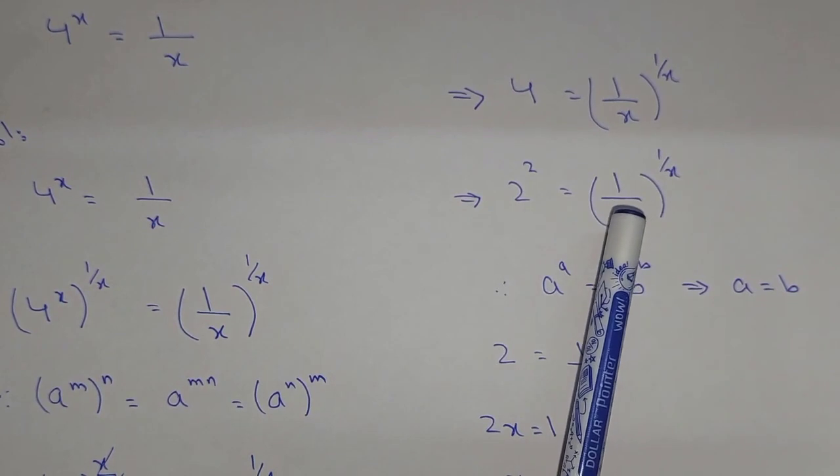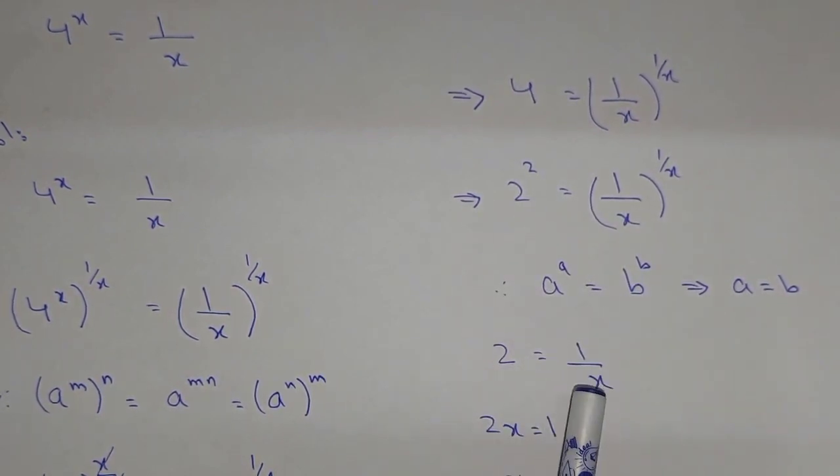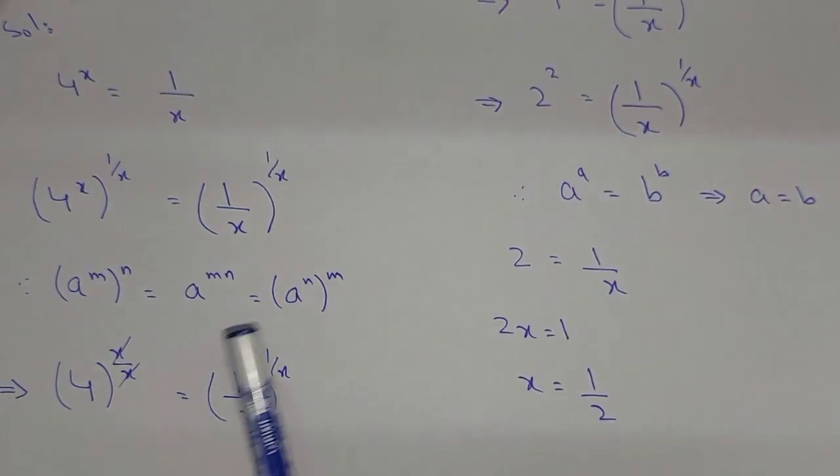So it can be written as 2x = 1, which means x = 1/2. So 1/2 is the final answer. I hope you understand. Thank you for watching this video.